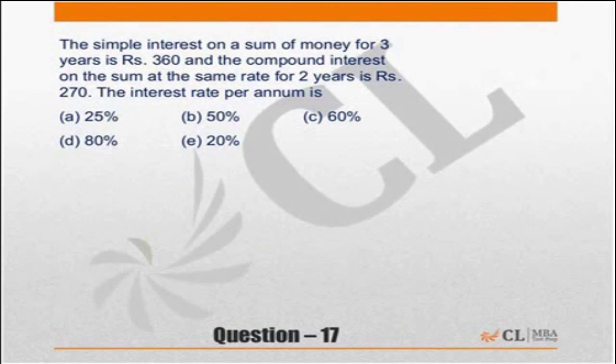Simple interest on a sum of money for 3 years is 360, and the compound interest on the same sum of money for 2 years is 270. What is the rate of interest per annum?